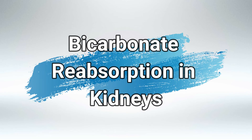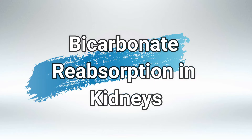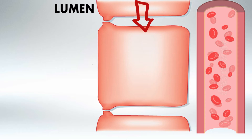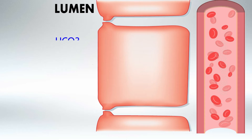Welcome back. In this video I'll help you understand the absorption of bicarbonate in the kidneys. Let's put some landmarks. Here we have the lumen, here is our proximal convoluted tubule cells, and here is a blood vessel. Let's assume that we have some bicarbonate in the lumen that we want to absorb.